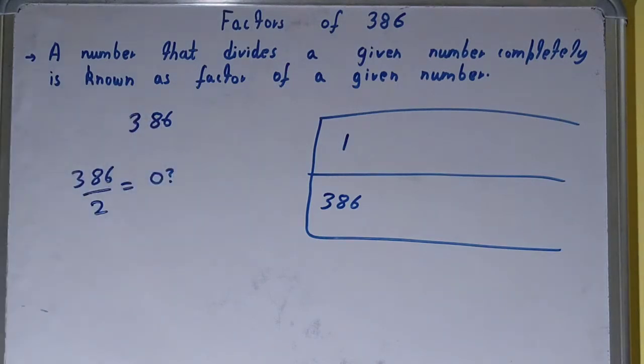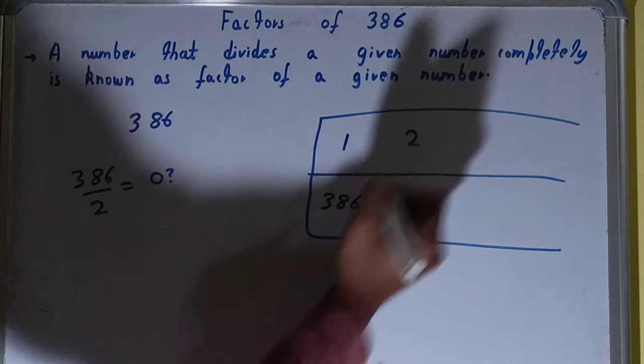After 1, we will check with 2. Now, is the number 386 divisible by 2? Yes it is, because 386 is an even number and all even numbers are divisible by 2. So 2 is a factor, and 2 into what times?